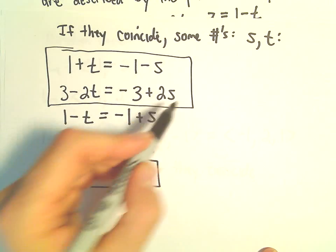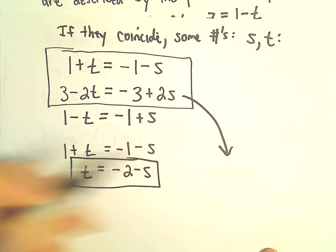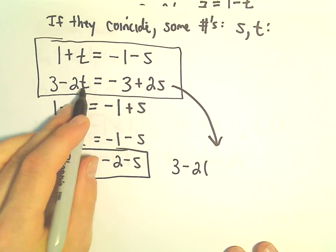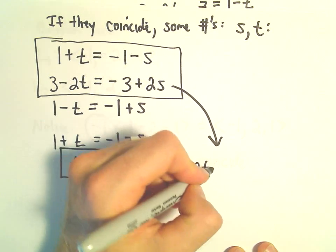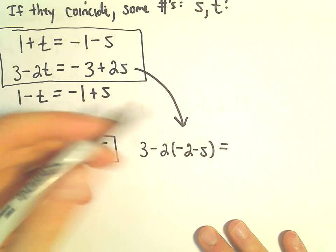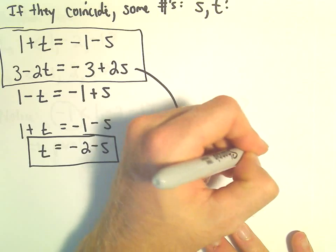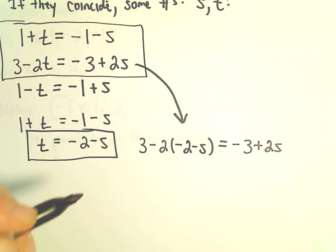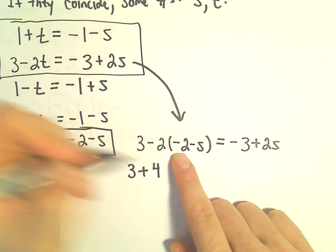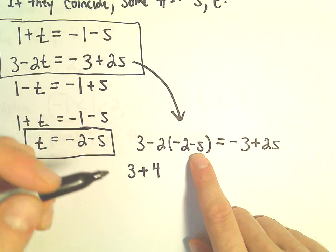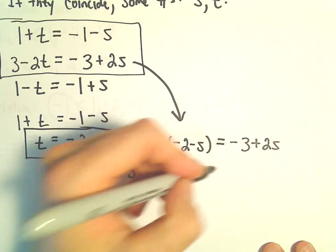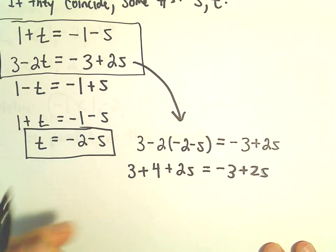And now I'm going to take that, and I'm going to plug that into my second equation. So we have 3 minus 2 times t. So 3 minus 2t. But t is negative 2 minus s. We're going to set that equal to negative 3 plus 2s. So we'll get 3, negative 2 times negative 2 will be positive 4, and negative 2 times negative s will be positive 2s. We've got negative 3 plus 2s on the right side.